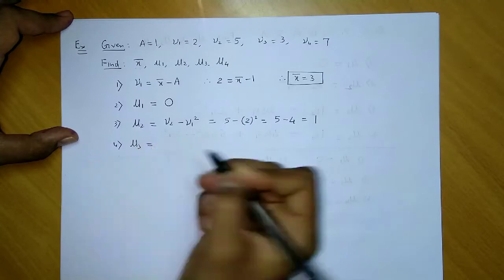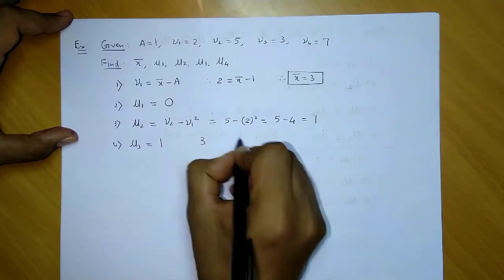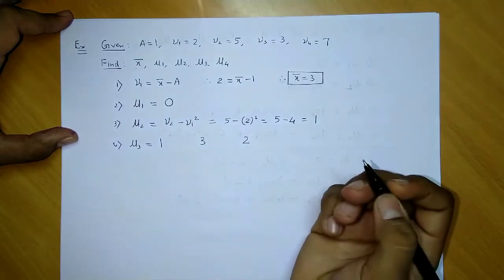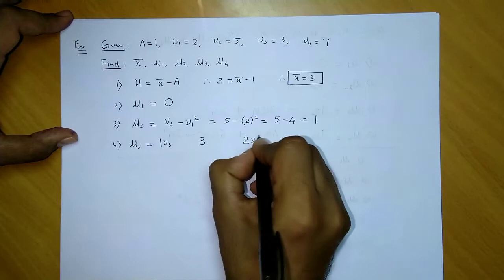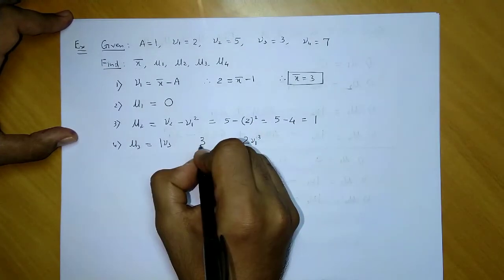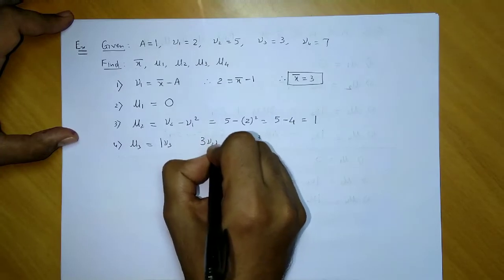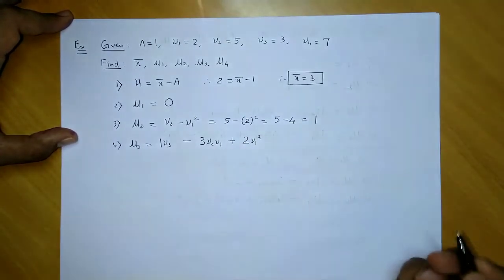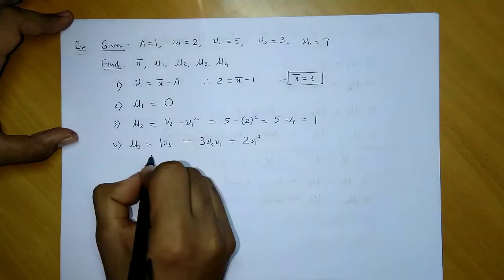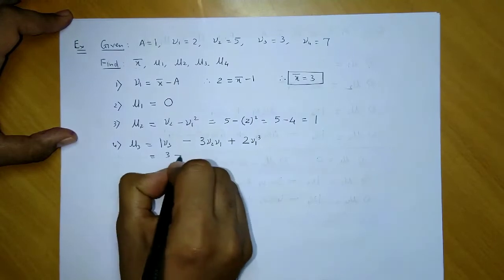Let's move to the third central moment, μ3. If you remember, we first write the coefficients: 1, 3, 2. You begin with v3, end with v1³, and with 3 you have v2v1. Then minus and plus.